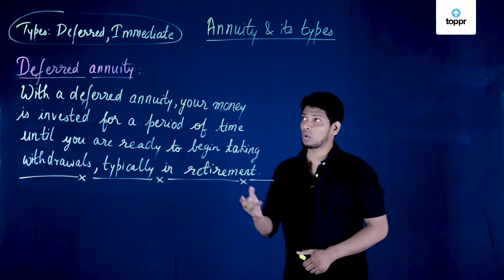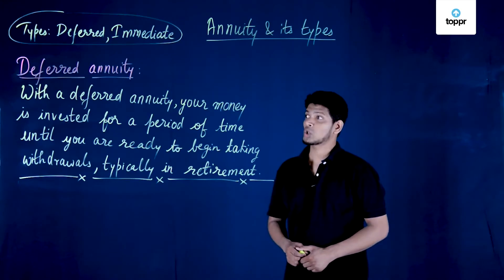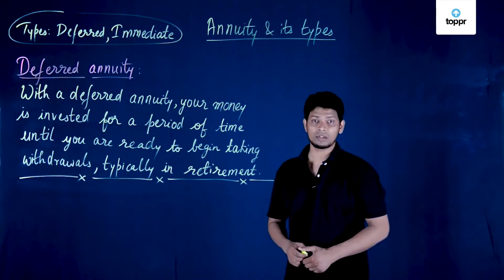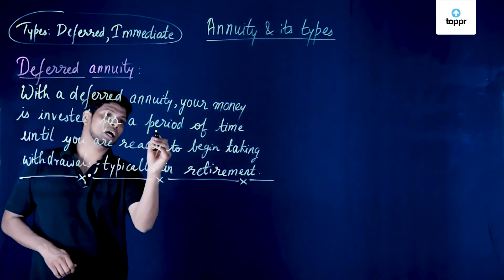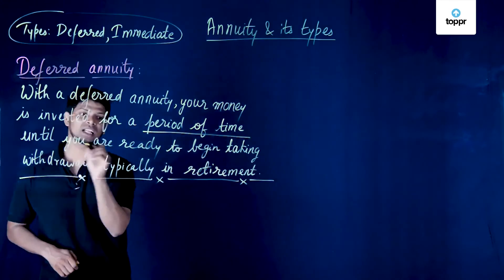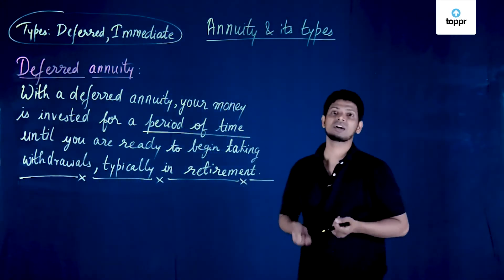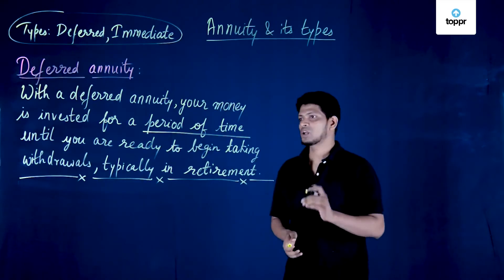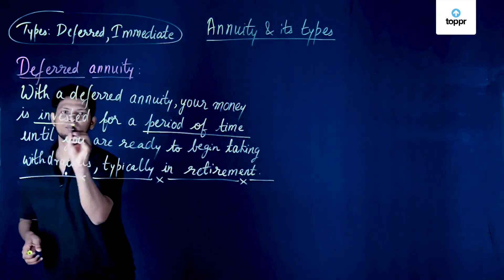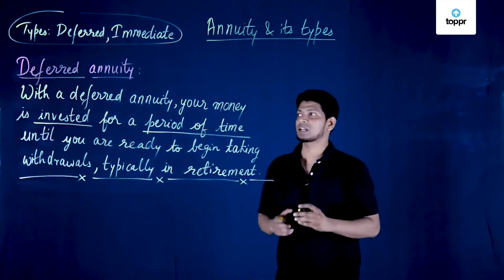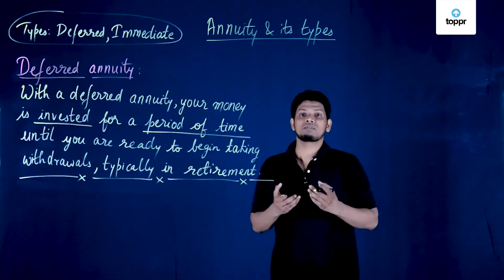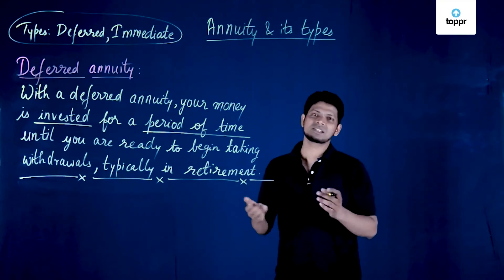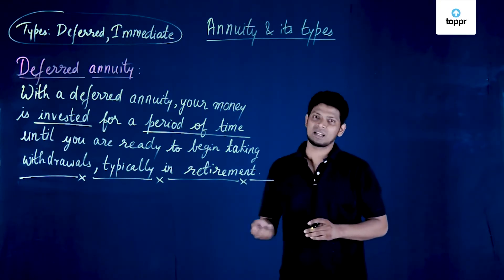With a deferred annuity, your money is invested for a period of time until you are ready to begin taking withdrawals, typically in retirement. Whatever money you have is invested over that period, and you receive it as a withdrawal when you are ready, typically at retirement.